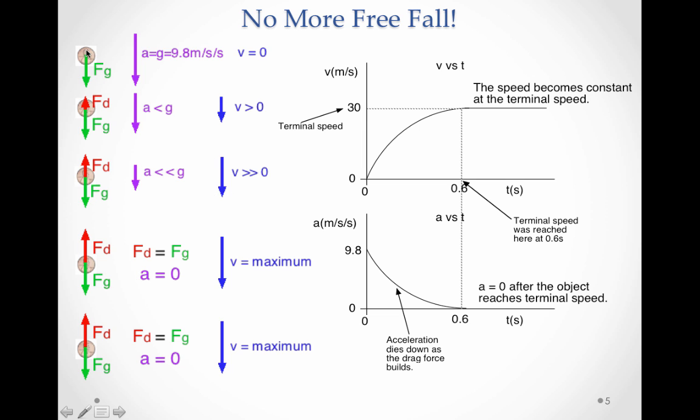So, what happens is a penny, when it falls, it starts to accelerate at 9.8 meters per second per second. That's right when it starts to fall. As it starts to fall, it gets faster and faster and faster. Well, as it's getting faster, it's moving through the air.